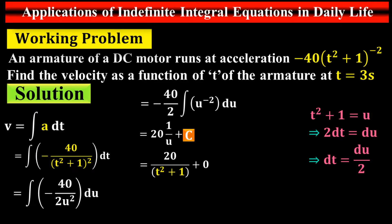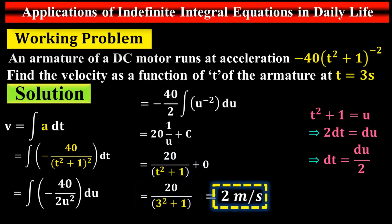Substituting back u = t² + 1 with C = 0, the velocity after 3 seconds is 2 meters per second. We used the u-substitution process here — if you don't remember, go back and check the u-substitution technique section. This is a typical example of an indefinite integral in the electrical sector using u-substitution.